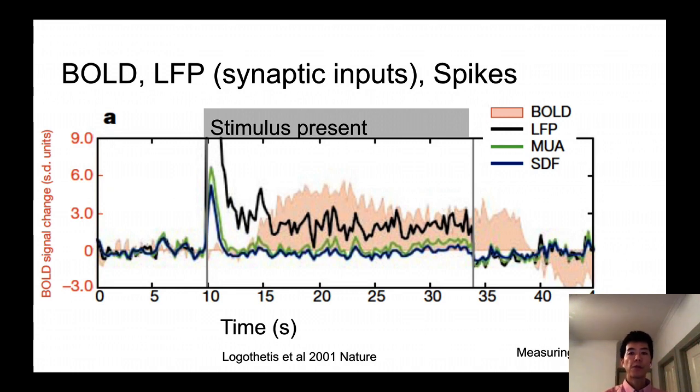Logothetis compares three major measurements from this system. One is a BOLD signal with this orange shade, and then local field potential black, multi-unit activity green, and the spike density function blue. And here, for our purpose, green and blue is more or less the same.